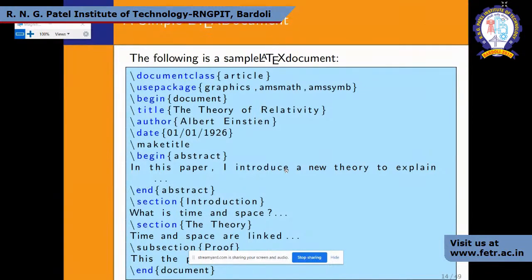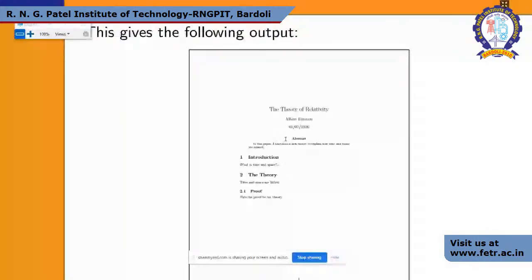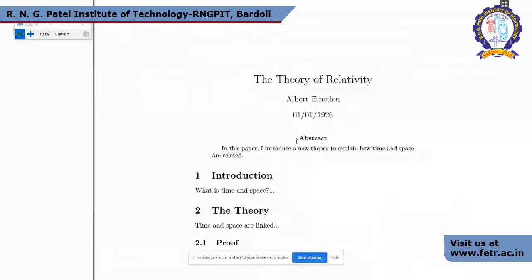In this basic section, we defined the document class, used usepackage, placed everything between \begin{document} and \end{document} in sequential order — title, author, date, abstract, sections, and subsections. The output shows: title, author, date, abstract, introduction as the first section, then 'Theory: Time and Space' as the second section, and subsection 2.1. You don't need to manually number them — if introduction was first, LaTeX automatically assigns it as section 1.